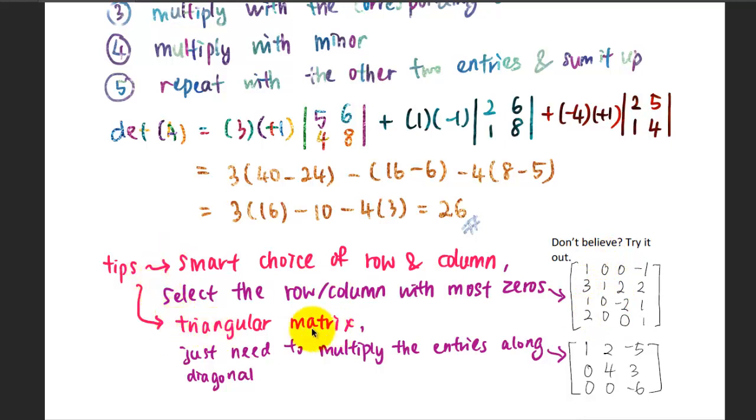The second tip is that the triangular matrix. The determinant of the triangular matrix is just the multiplication of the entries along the diagonal. For example, this is an upper triangular matrix. The determinant is 1 multiplied with 4 multiplied with negative 6. You don't believe it? Try to work it out using this method and you'll find out that this is a very smart tip for you to determine the determinant for 3 by 3 and above matrices.